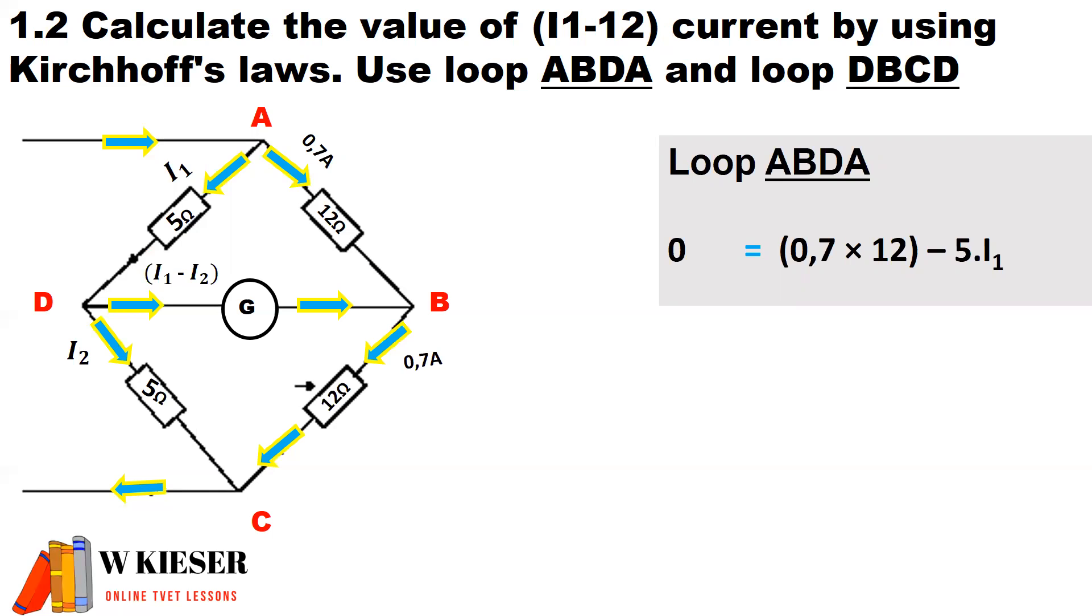So, therefore, to manipulate this equation, 0.7 multiplied by 12 gives us 8.4. When we take it to the other side, it becomes a negative sign, and that is equal to minus 5 times I1. Therefore, I1 is equal to minus 8.4 divided by minus 5. Hence, I1 is equal to 1.68 amps.